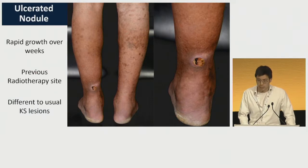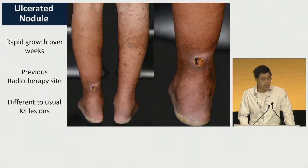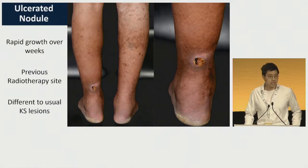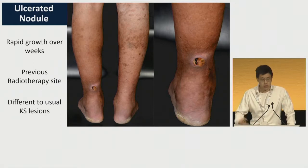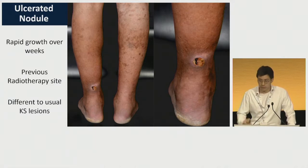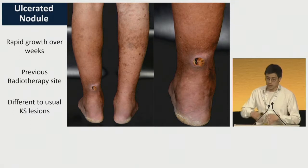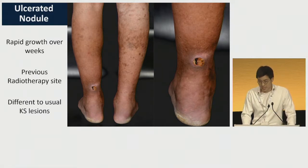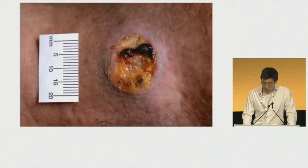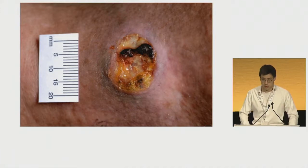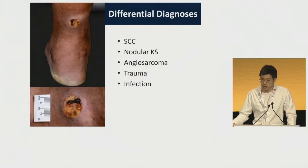More recently, back in December last year, he developed a rapidly growing nodule on the back of his left leg, which was very different from his usual Kaposi sarcoma. This grew over the course of four to six weeks, was painful, was ulcerated, and was very raised as well. This was at a site of previous radiotherapy. On higher magnification, this was a raised nodular lesion that was ulcerated and very tender to touch.